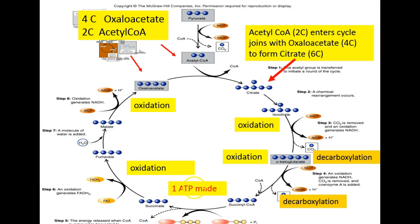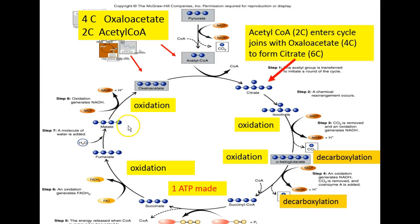Notice the coenzyme A molecule is still present; this is a high-energy compound used to make one ATP. This is the step where an ADP molecule is phosphorylated to make ATP. The remainder, succinate, is oxidized yet one more time. In this step, however, the electron carrier is not NAD+ but rather FAD, which picks up hydrogen atoms producing FADH2. The end result of that step is fumarate.